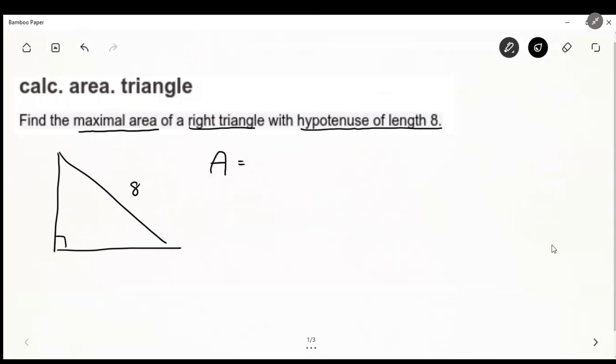So we know the area of a triangle is one-half base times height. We can call this base, we can call this height.